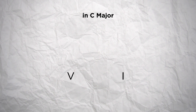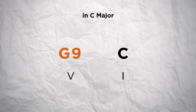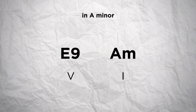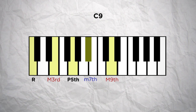So in C major for example, the 5th degree would be G, so the progression would be G dominant 9th to a C major chord. And in A minor, a 5 to 1 progression would make E dominant 9th to A minor chord. It is also a common practice to omit the 5th in a dominant 9th chord, so you would have only the tonic, the 3rd, the 7th and the 9th.